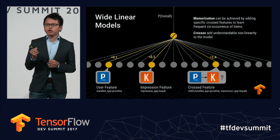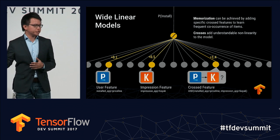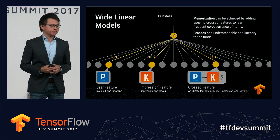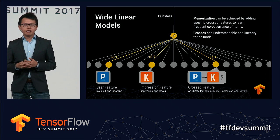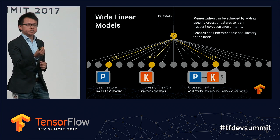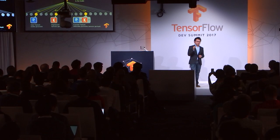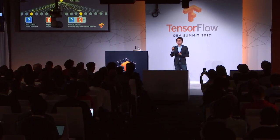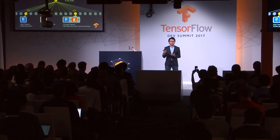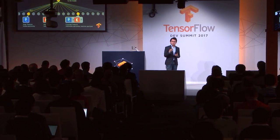The simplest model you can pick is a linear model, or logistic regression in this case. The inputs are a bunch of features: user features, the installed app being Priceline, and impression features — if we show Kayak as the impression app, what's the likelihood of install? To add memorization capability, you can add a cross feature — the AND operation over binary base features. The cross feature can be 'installed app is Priceline AND impression app is Kayak.' If both are true and we see a lot of correlation in the data — people who installed this also installed that — then you can memorize this frequent co-occurrence. And by adding less specific features like app categories, you can generalize to other travel apps, not just Priceline or Kayak.